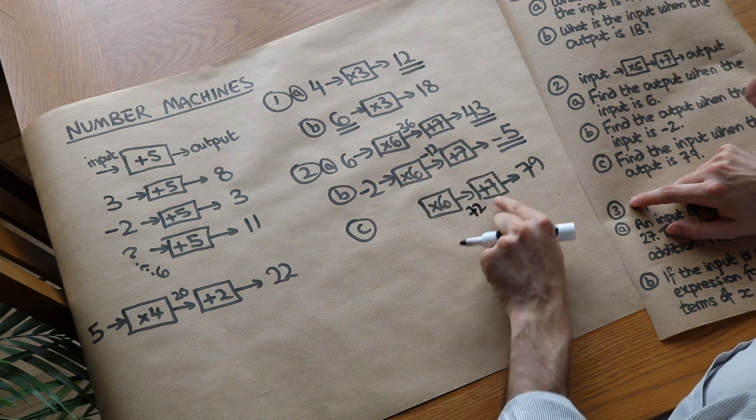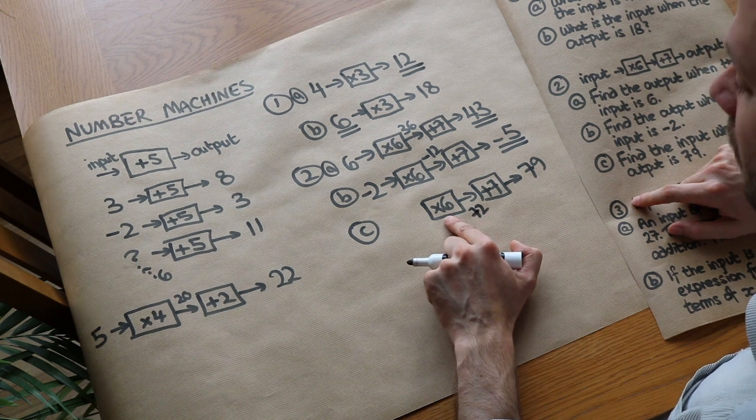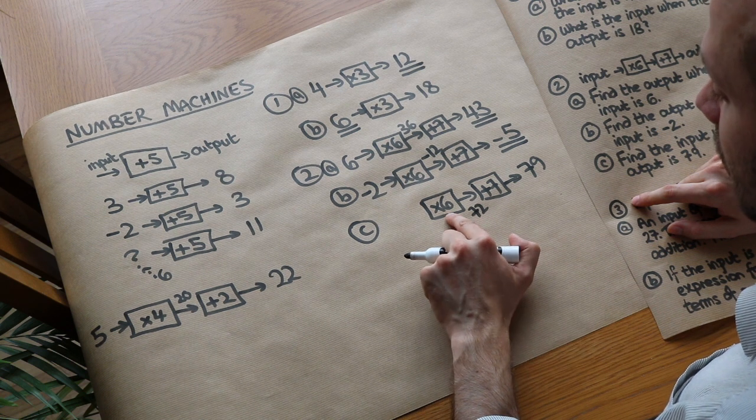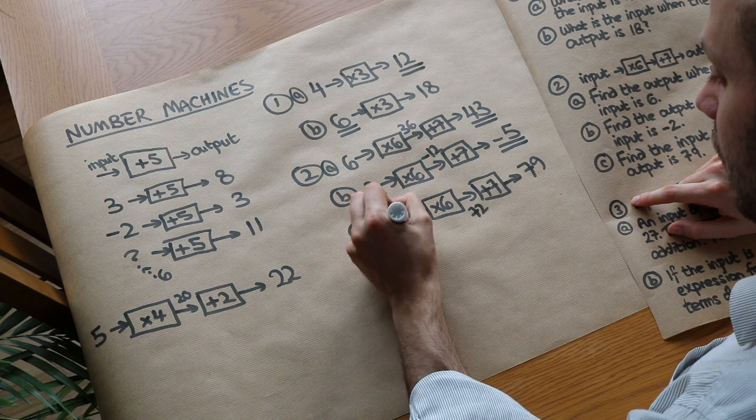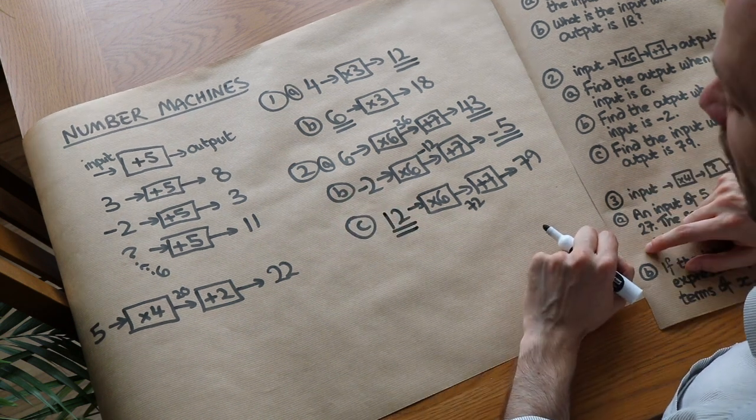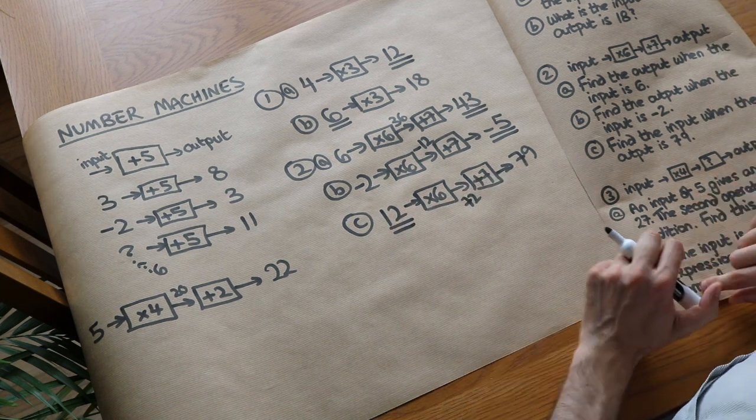So 79 minus 7 gives us 72. You can see that 72 plus 7 would give you 79. And then we've got to do this times 6 backwards. So the opposite of timesing by 6 is dividing by 6. 72 divided by 6 gives us 12. So the answer would be 12. And we can always check it by putting the 12 back through these two number machines and checking that we get 79.